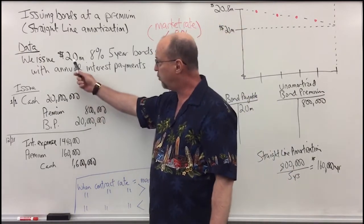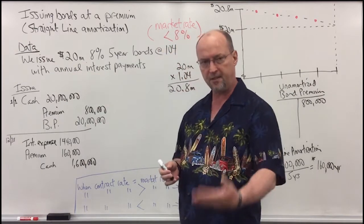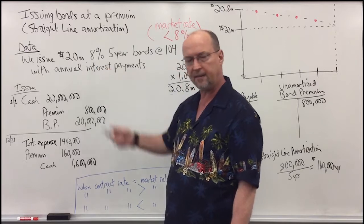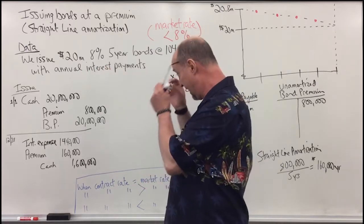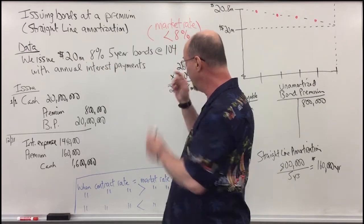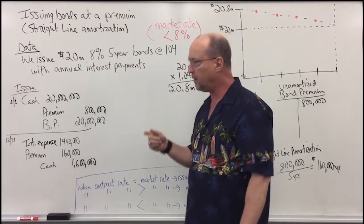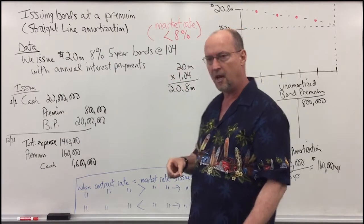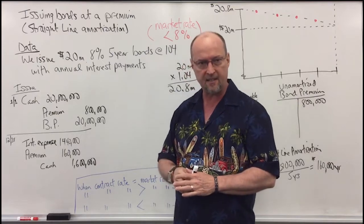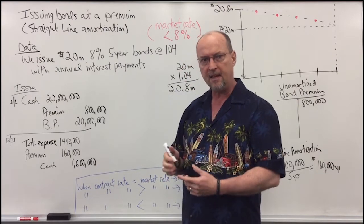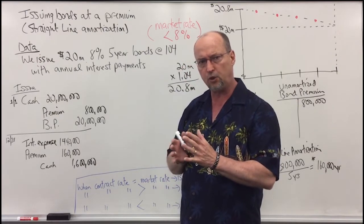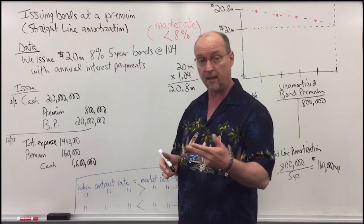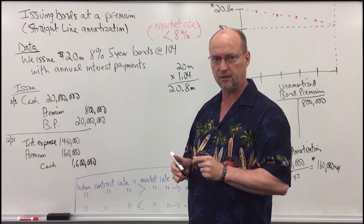We're going to issue $20 million face value of bonds that pay 8% — we call that the contract rate. The bond duration is 5 years, and we're issuing the bonds at 104, which means 104% of the face value. We're taking a shortcut in how we calculate the market value of the bonds on the date of issuance.